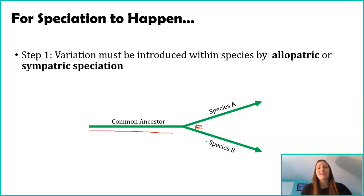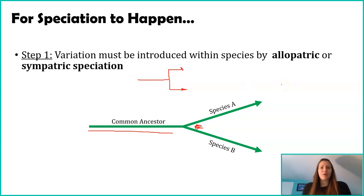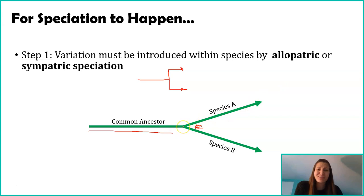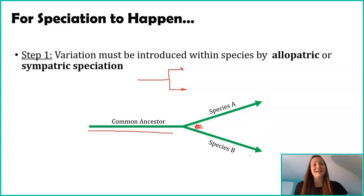Eventually species A is quite different from species B, and they no longer interact or breed with one another. I don't want you to think it's: common ancestor, boom, species A, boom, species B — because it's not that way. It's a gradual progression. At some point as these species are diverging, we say those are species, they're no longer breeding with one another. Early on when they're just diverging, they could probably still reproduce and create viable offspring. It's not until they're much further apart that we say they're completely separate species — not interacting, not reproducing, or if they are, not successfully.